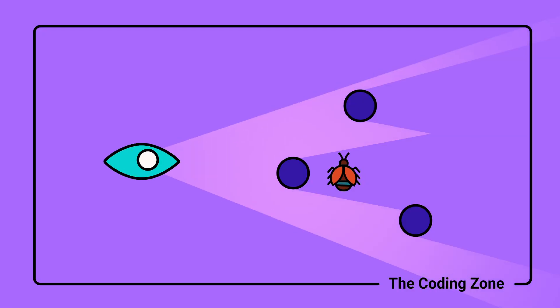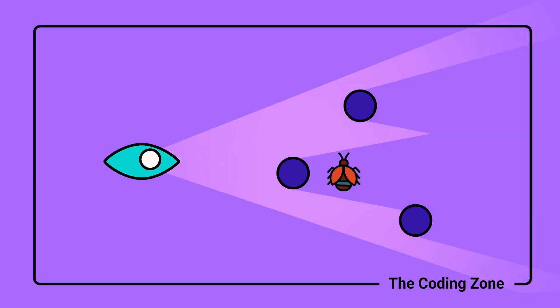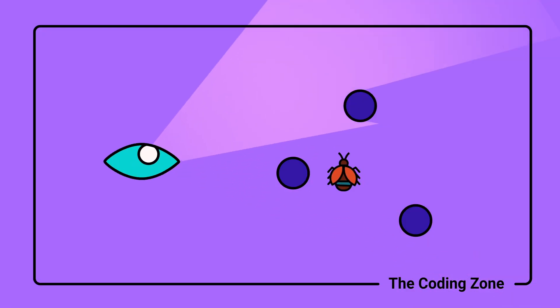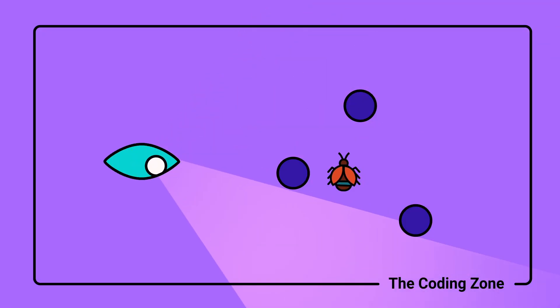Surprisingly, you may have already tried debugging using this method. At its core, what you're trying to do is engage your brain in a different way to look at the code from a slightly different perspective. When you're writing, you're all up in the code and it may not be apparent that you're making some incorrect assumptions or decisions that are causing the problems.